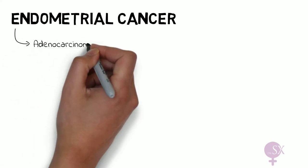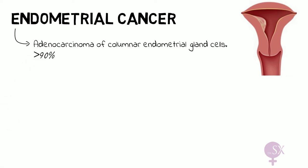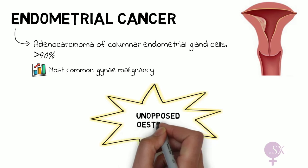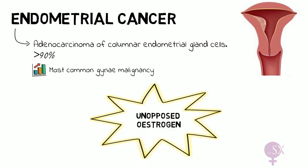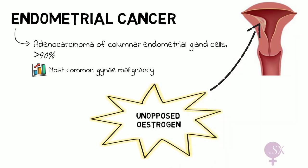Endometrial cancer is most commonly adenocarcinoma of columnar epithelial gland cells, in around 90% of cases. It is the most common gynaecological malignancy and the fourth most common malignancy in women in the UK. The cause is most often related to excess estrogen — specifically high levels of unopposed estrogen, meaning progesterone is not present to counteract it. Estrogen results in proliferation of the endometrium, which can lead to hyperplasia and malignancy.